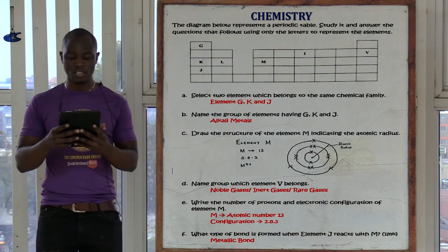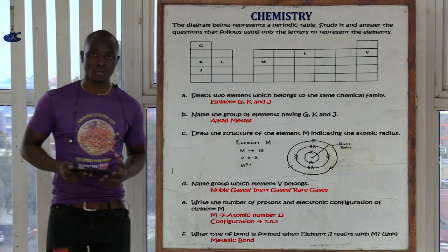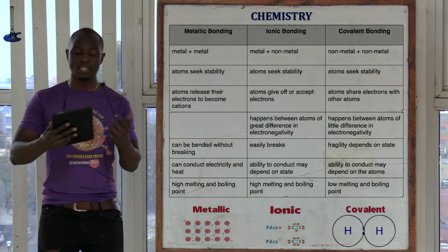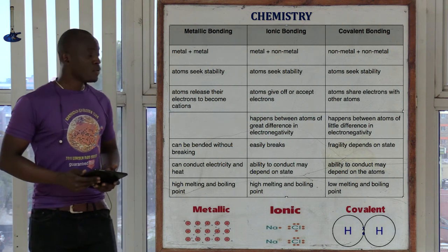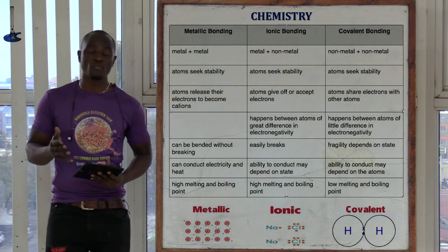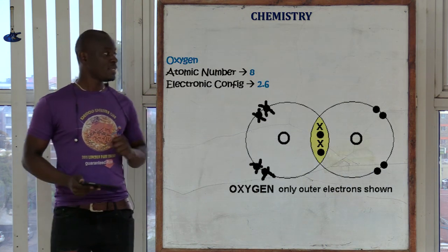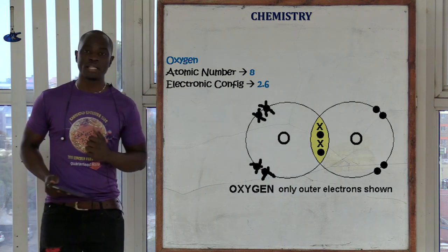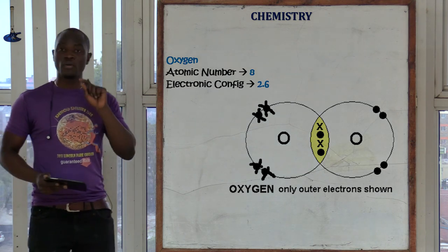The next question asks: what type of bond is formed when element J reacts with element M? Element J is a metal and element M is also a metal. So if two metals react, they form a metallic bond. In the previous classes, we said covalent bonds are mainly formed when non-metals react with non-metals. For example, if one oxygen atom reacts with another oxygen atom, that forms a covalent bond — represented using interlocking circles — producing the oxygen molecule.